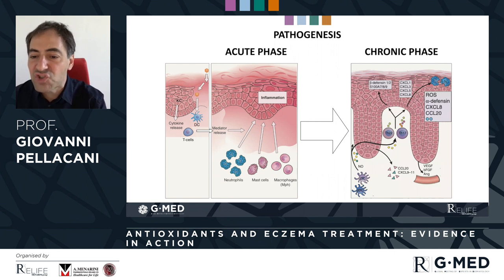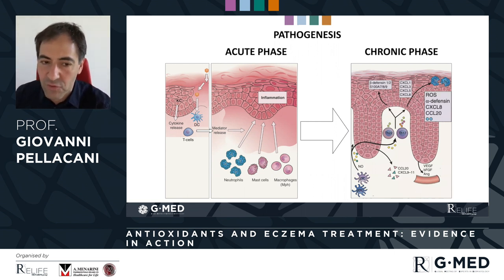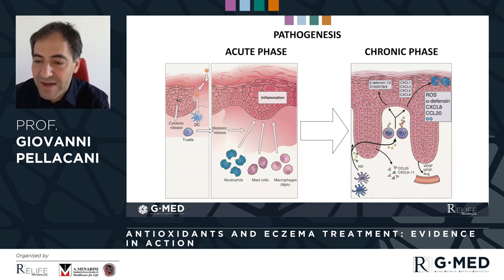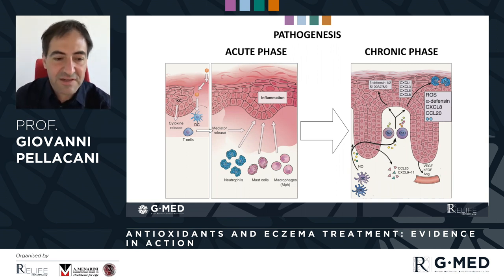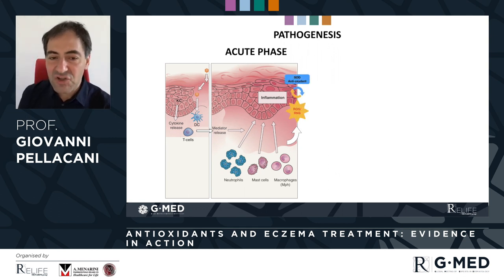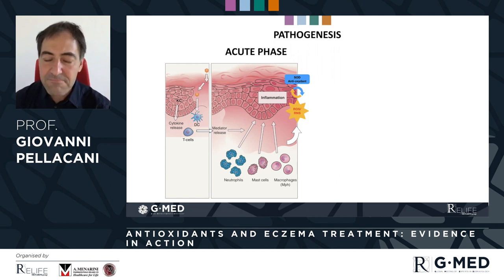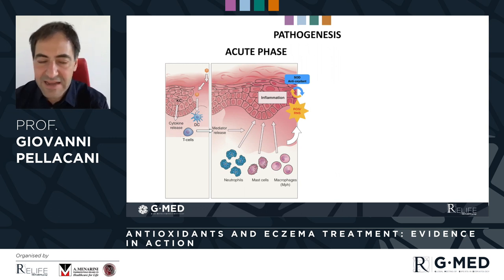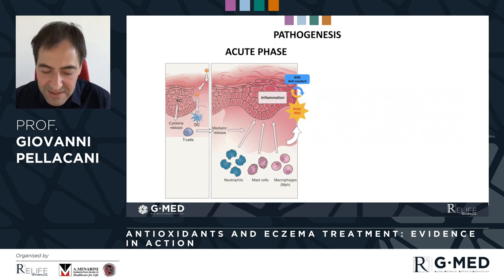This inflammatory process changes over time, also changing part of the actors involved. We see a constitutional change of the epidermis and dermis with thickening and elongation of the crests and the maintenance of a substrate of inflammatory and immune system actors. During the inflammatory process, we have a very important increase in oxidation. The epidermis has an antioxidant capacity that acts to counteract this increasing oxidation.